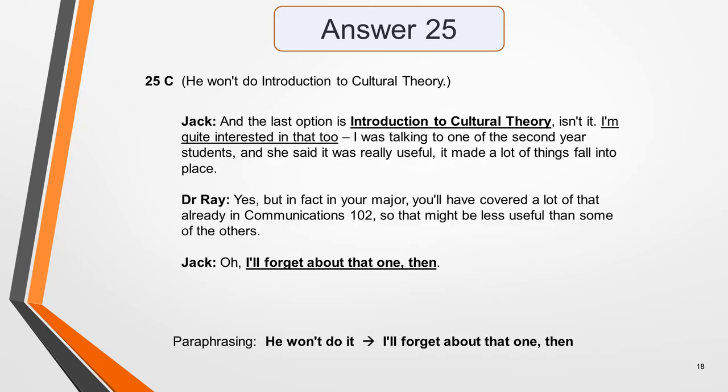Answer 25 is C — he won't do introduction to cultural theory. In the dialogue, Jack says he's quite interested in that option too, having spoken to a second-year student who said it was really useful and made lots of things fall into place. However, the tutor points out that in his major he'll have covered a lot of that already in Communication 102, so it might be less useful than some of the others. Jack responds: 'Oh, I'll forget about that one then.'